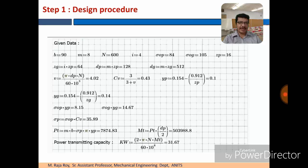After getting Pt, you can get mt. Pt into dp by 2, that is nothing but mt. Once mt value is known, we can get the power. Power equal to 2 pi n mt by 60 times 10³. That is 31.67 kilowatts. This is the design procedure, standard design procedure.